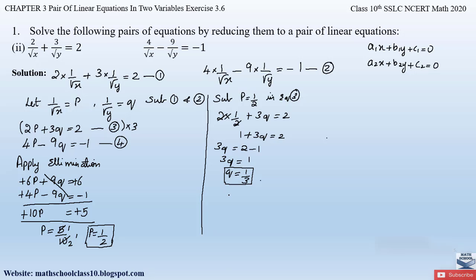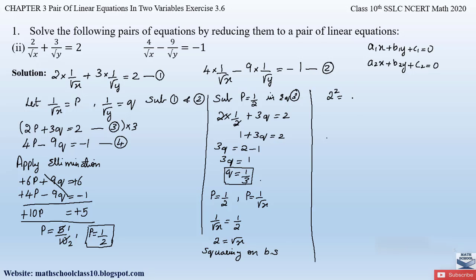We had assumed 1/√x = p and 1/√y = q. Since p = 1/2, we equate: 1/√x = 1/2. Cross-multiplying gives √x = 2. Squaring both sides: (√x)² = 2², so x = 4.